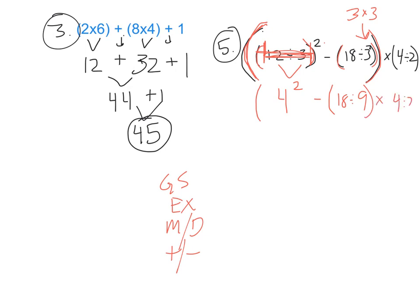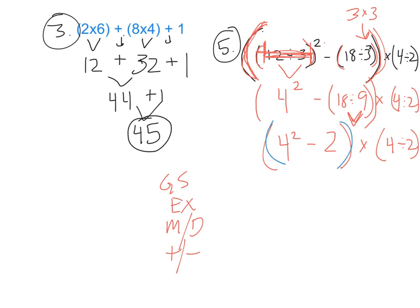I bring down 4 squared in parentheses. Then 18 divided by 9 is 2, and I still have 4 divided by 2 outside. Now I have two sets of parentheses. Inside, do I do subtraction or exponents first? I come back to my list — I know I do exponents. So 4 to the second power is 16 minus 2. They're still in parentheses because there are still operations to do, and then times 4 divided by 2.